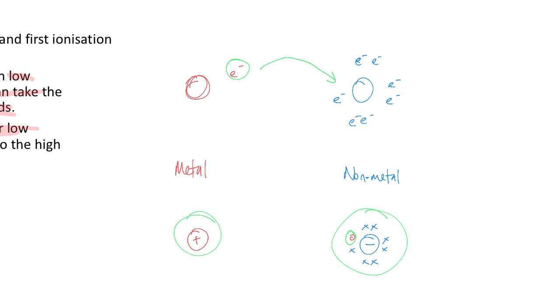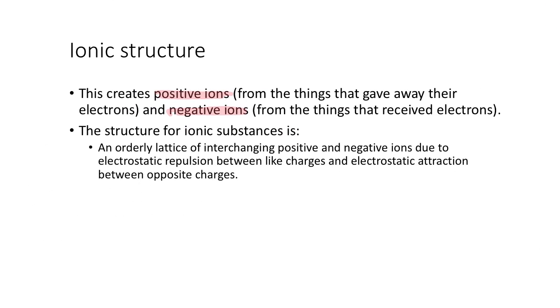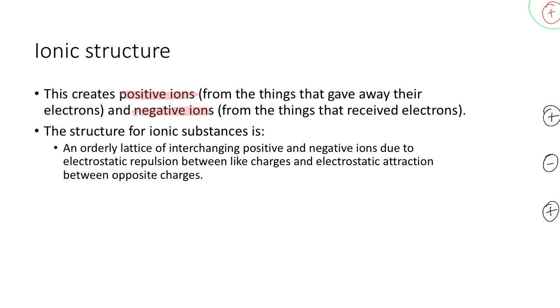The metal becomes a positive charge one, and the non-metal becomes a negative one because it's got an extra electron. This creates an orderly lattice structure of interchanging positive and negative ions due to the electrostatic repulsion between like charges and electrostatic attraction between opposite charges.